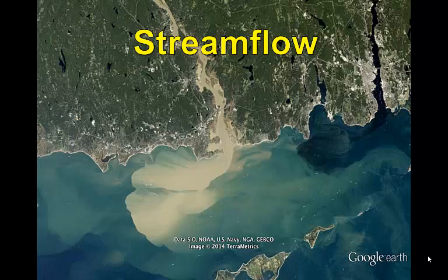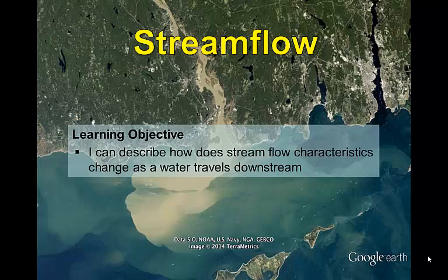Rivers created much of the landscape we inhabit. They deposited fertile sediment on the floodplains that we farm, and in many places their flowing water provides power to generate the electricity that lights our homes. This lesson takes a closer look at how water flows through stream systems from small creeks to large rivers.